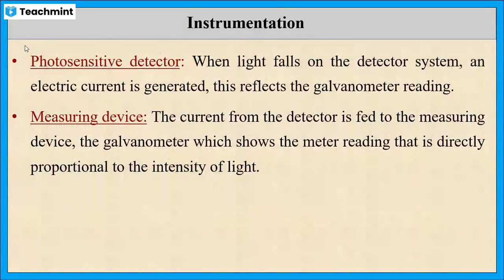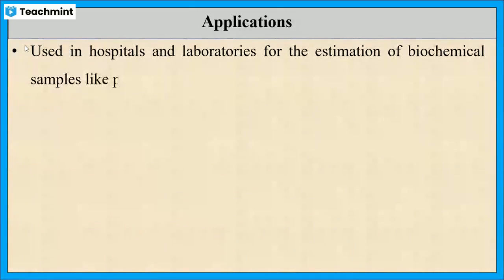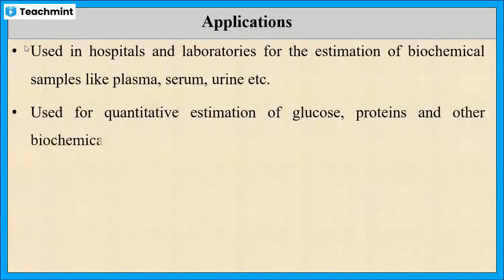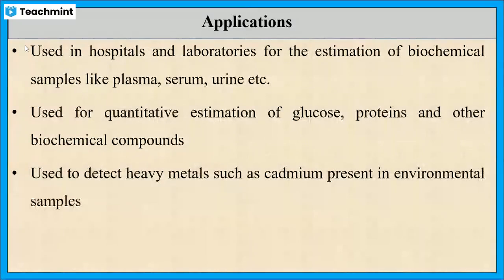Now let us see some applications of colorimetry. Colorimetric sensors are used for biomedical and healthcare applications such as estimation of plasma, serum, and urine. They are also used for quantitative estimation of glucose, proteins, and many other biochemicals. Heavy metals such as cadmium present in environmental samples can also be detected using a colorimeter.